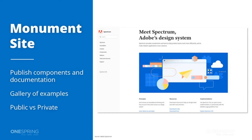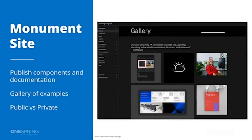Another important thing with a monument site is having a gallery. This is an example of IBM's design language system called Carbon. A gallery is hugely important because it helps show folks how that design system was actually implemented — where it was used, how it's effective, what's available, and how others can best leverage the library.